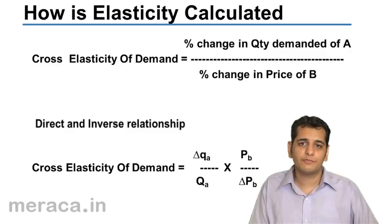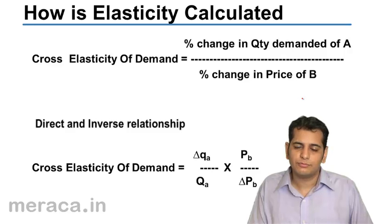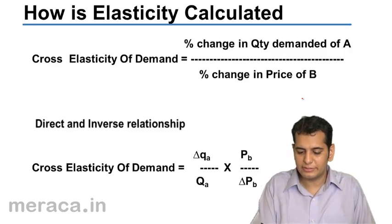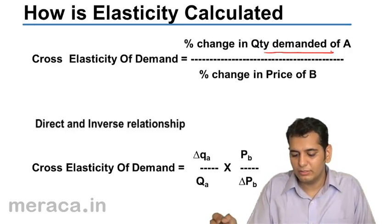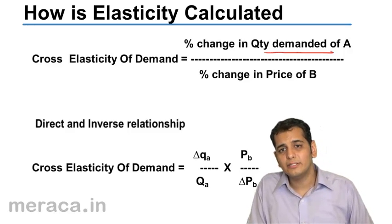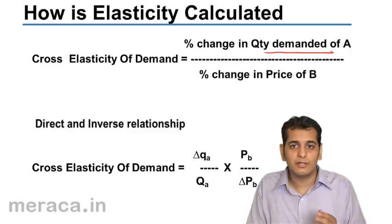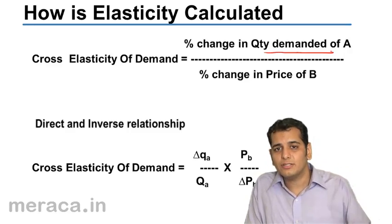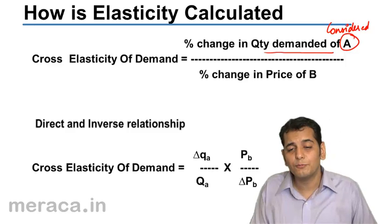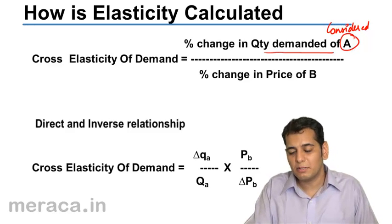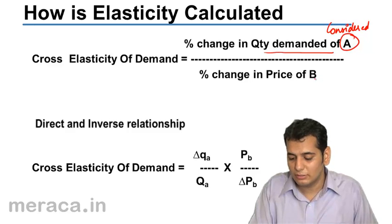The formula for calculating cross elasticity of demand is almost similar to that of price elasticity. In price elasticity, the numerator takes the percentage change in quantity demanded. Here also we take the percentage change in quantity demanded — but note that we are considering two goods: the good being considered and the related good. In the numerator we take the percentage change in quantity demanded of the considered good.